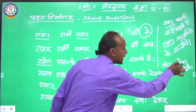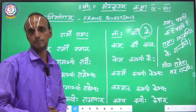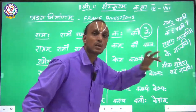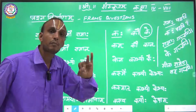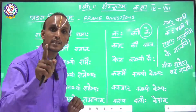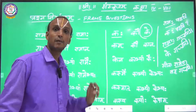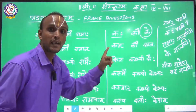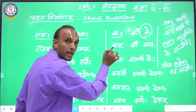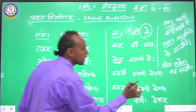So I am underlining this word Ramena. Ramena belongs to Ramashabdaha, Tritiyavibhaktihi, Ekavachanam, Pumlingaha. So you have to take the same Kimshabdaha, Pumlingaha, Tritiyavibhaktihi, Ekavachanam. From the Kim Shabda table: Kaha, Kau, Ke, Kam, Kau, Kaan, Kena — so you write: Sita Kena Saha Gachati.